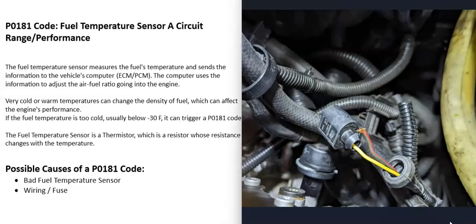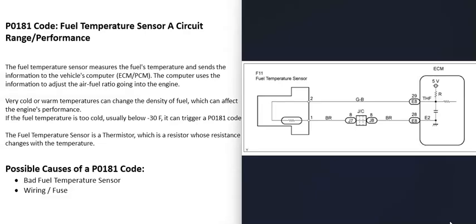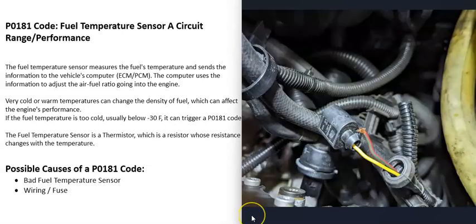The next possible cause is a wiring problem going to that sensor — an open circuit, a short, or a blown fuse. Get wiring schematics for the vehicle and check the wires. It is very common for these sensors to receive five volts. One wire going to the sensor carries five volts; as it passes through the thermistor, the voltage drops based on the temperature. It then comes out the other side and goes back to the computer, which calculates the fuel temperature based on that voltage drop. Use a multimeter to verify you're getting voltage and that the signal wire back to the computer is good.